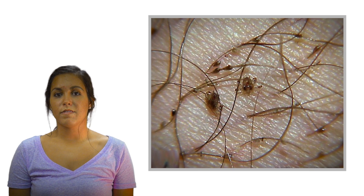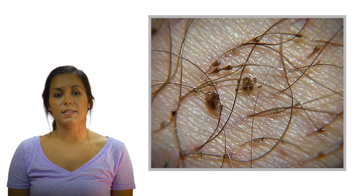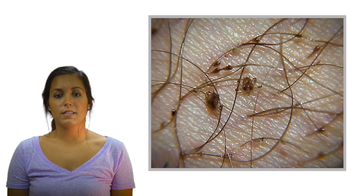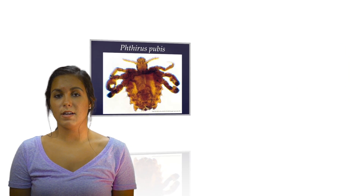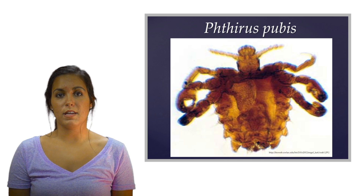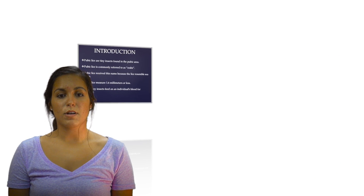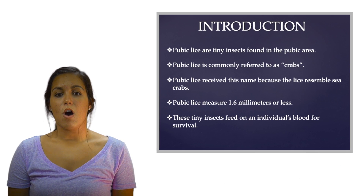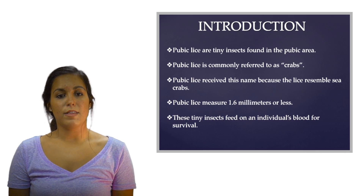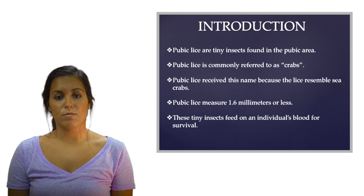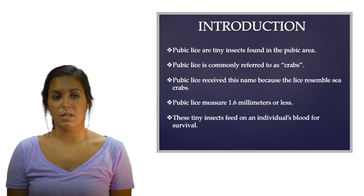Pubic lice, also referred to as crabs, is a sexually transmitted disease caused by the infestation of a small parasite known as Pthirus pubis. It is transmitted via sexual contact, although bedding and clothing may play a minor role in their transmission.